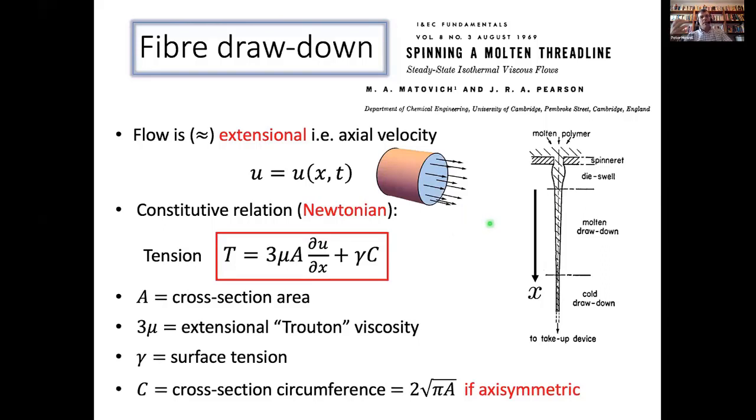And so the game here is basically we want to use the slenderness of the geometry to simplify the governing equations, the Navier-Stokes equations and all the boundary conditions. And when you do that, a couple of things that come out, first is that the flow is extensional, by which I mean that the velocity is basically uniform in any cross-section of the fibre.